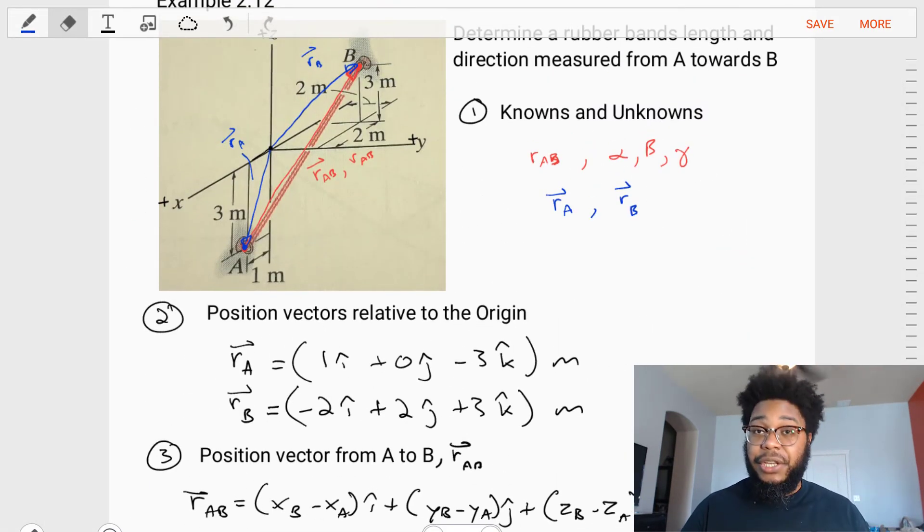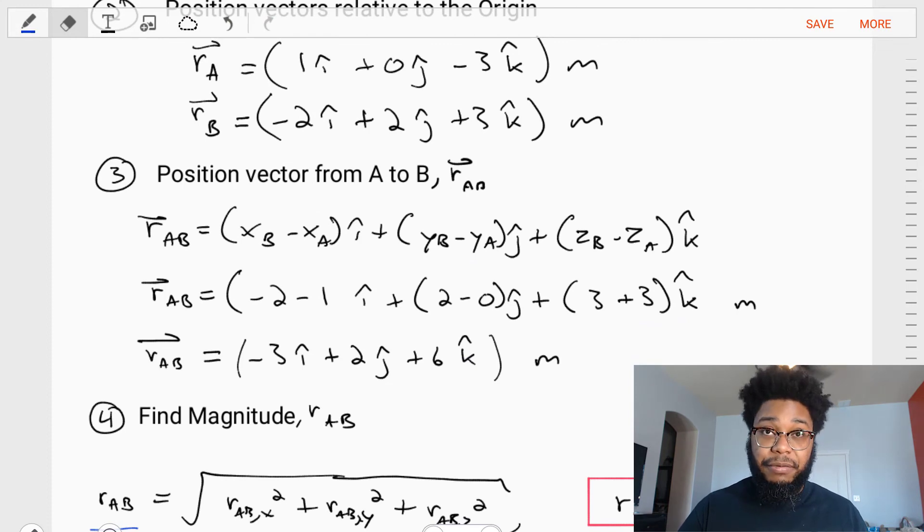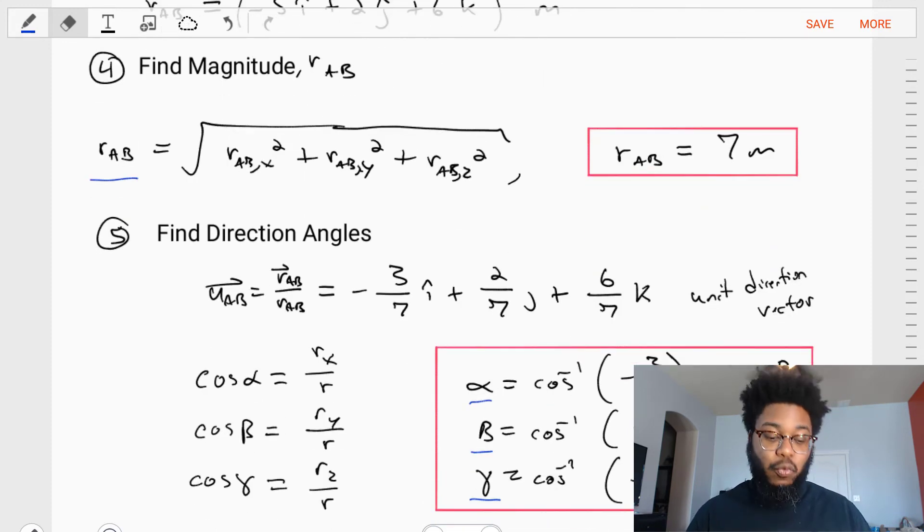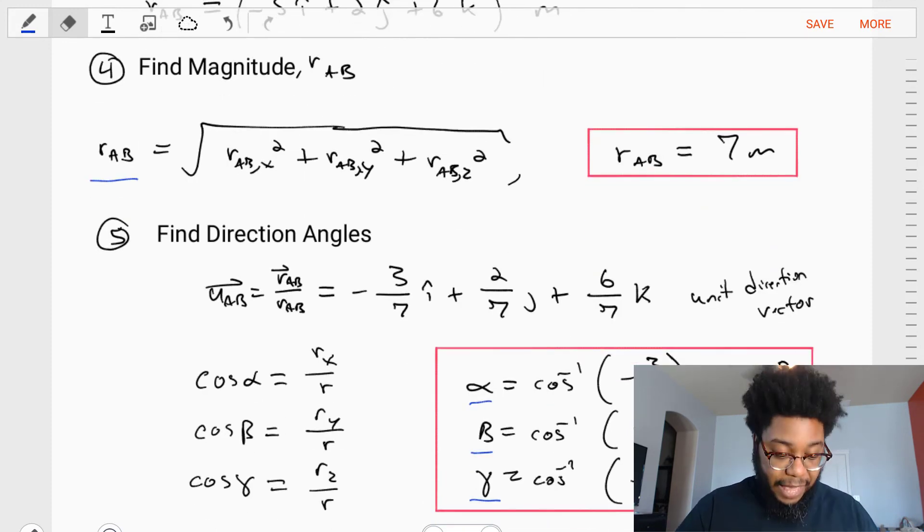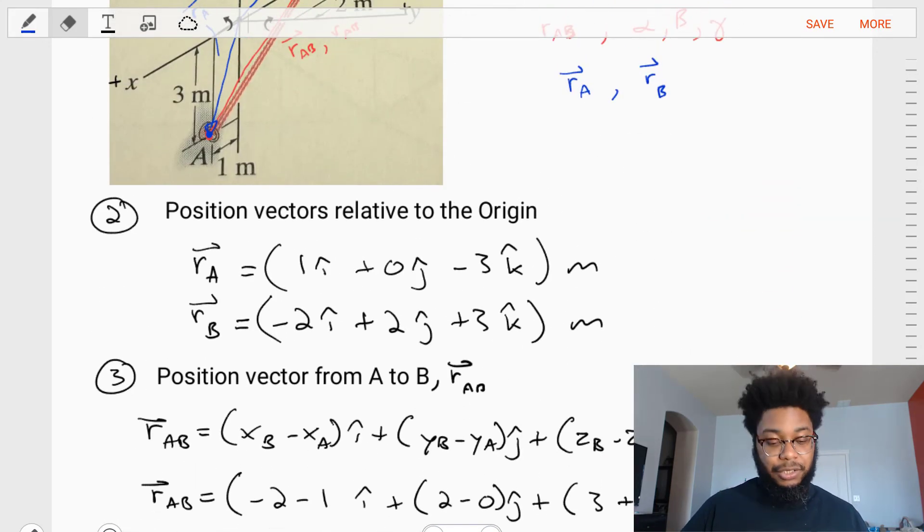We took our knowns and unknowns and identified a path forward in solving this problem. We wrote out the position vectors for A and B positions. Then we did the basic operation: the vector RAB equals the components of B minus A. We took that RAB vector and broke it down into its magnitude as well as its unit direction vector and subsequent direction angles. That's the end of this example. If you have any questions, leave comments in the chat room below. I'll see you in the next example video.